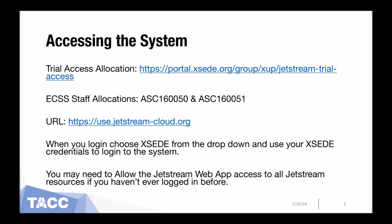Now that you know a little bit about Jetstream and you'd like to access it, here are the steps for how to do that. You can access Jetstream as long as you have an XSEDE account. You will need to request an allocation for Jetstream, but you should be able to get one almost immediately. Even regular users can gain access with a trial access allocation. ECSS staff can request access to either of the ECSS staff allocations listed here. Once you have an allocation, you can go to this URL and log in. You'll need to approve the web app access, but after that it will log you in and immediately drop you on a dashboard.